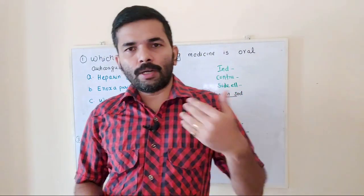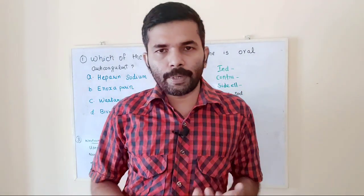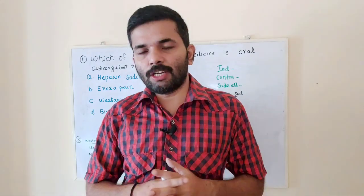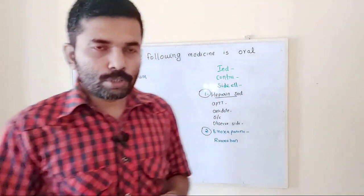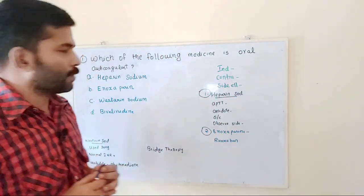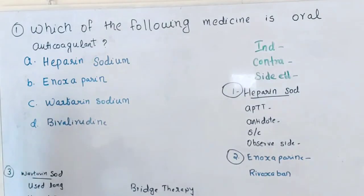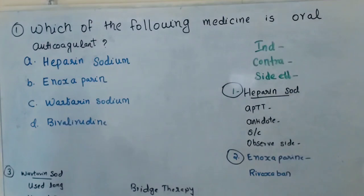This covers all types of central government and state government examinations. Let's go to the questions. First question: which of the following medicine is an oral anticoagulant?